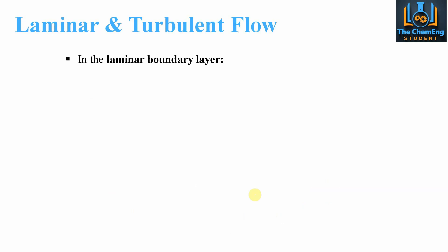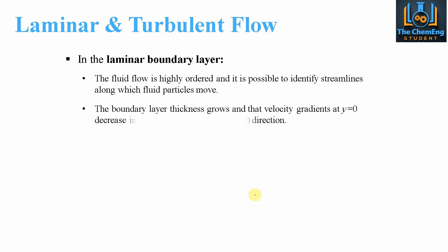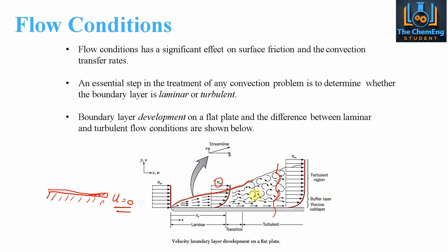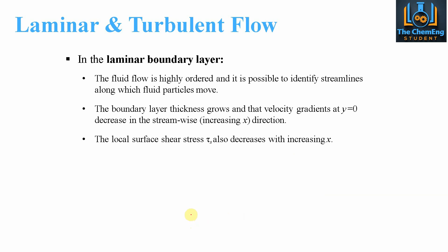In the laminar boundary layer, the fluid flow is highly ordered and it's possible to identify the streamlines along with the fluid particles. The boundary layer thickness grows and the velocity gradients at y equals 0 decrease in the streamwise direction as x increases. The local surface shear stress, tau s, will also decrease with increasing x because our boundary layer is beginning to grow. We won't have the same volume of fluid reaching and touching the body of the plate.